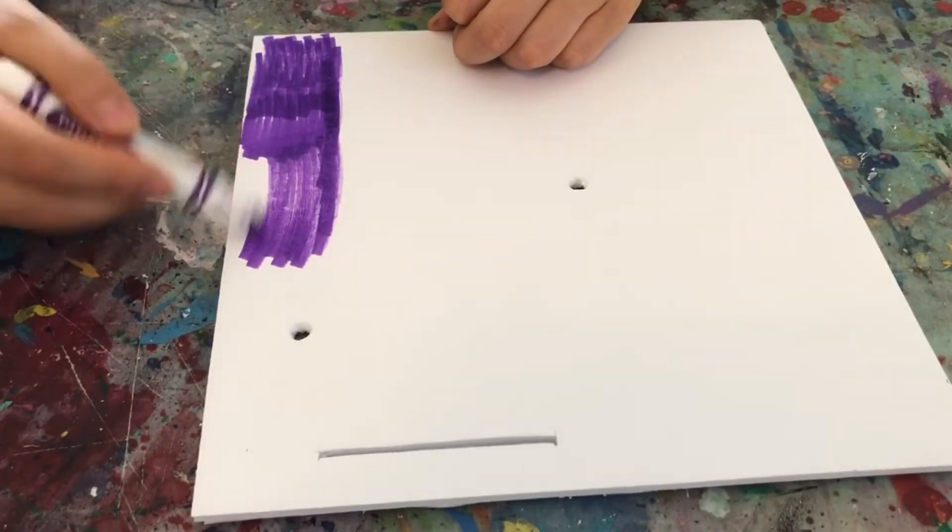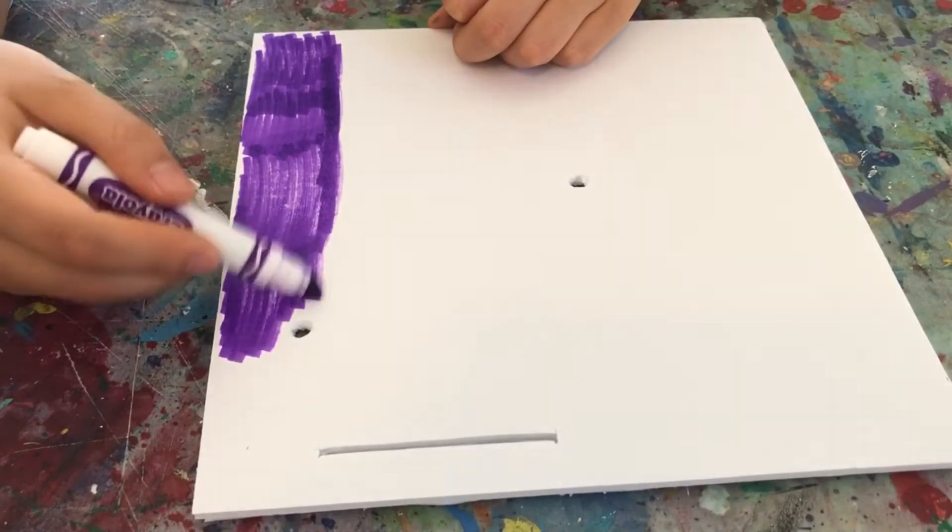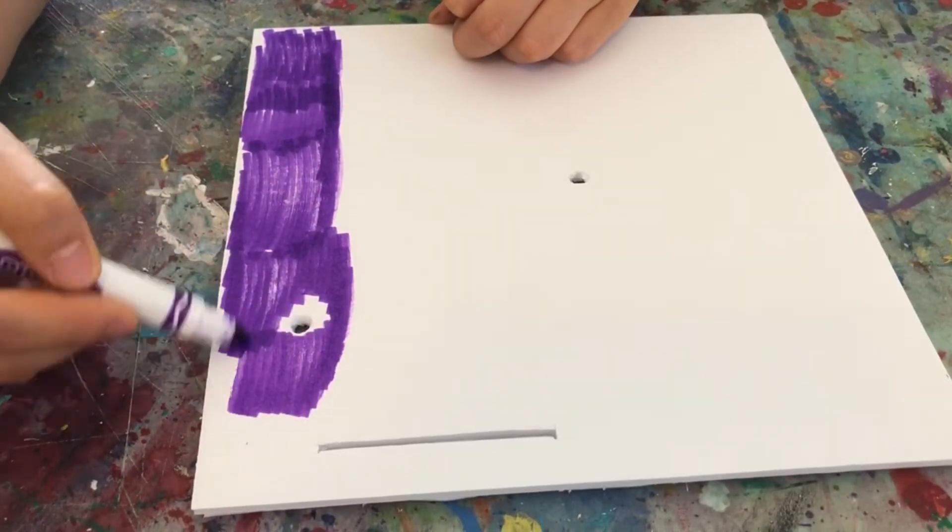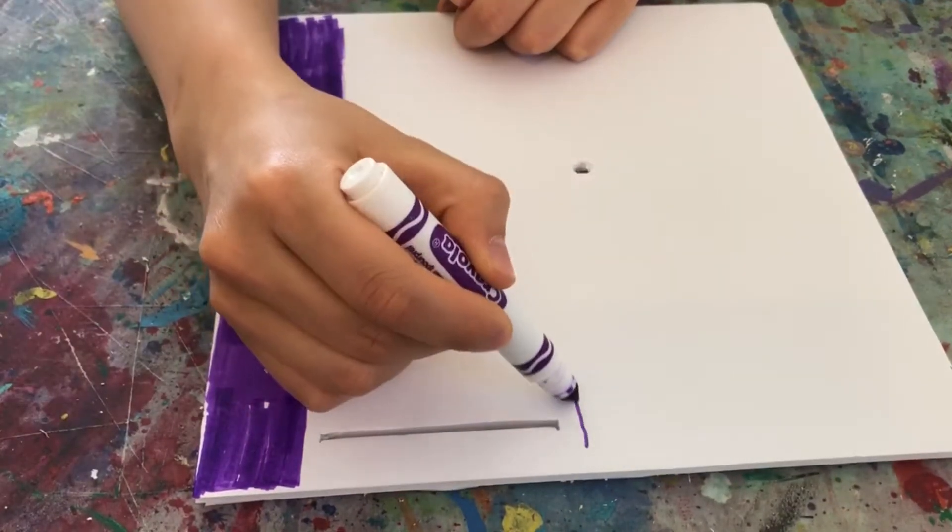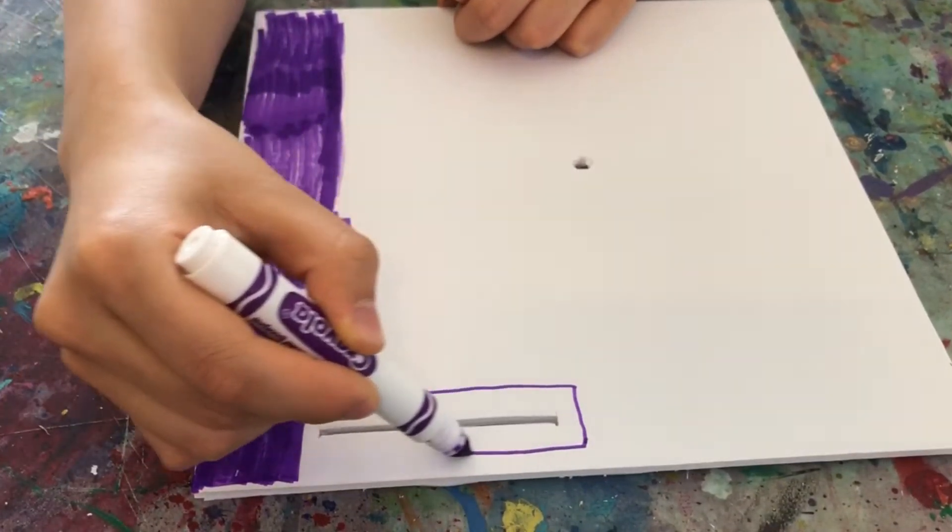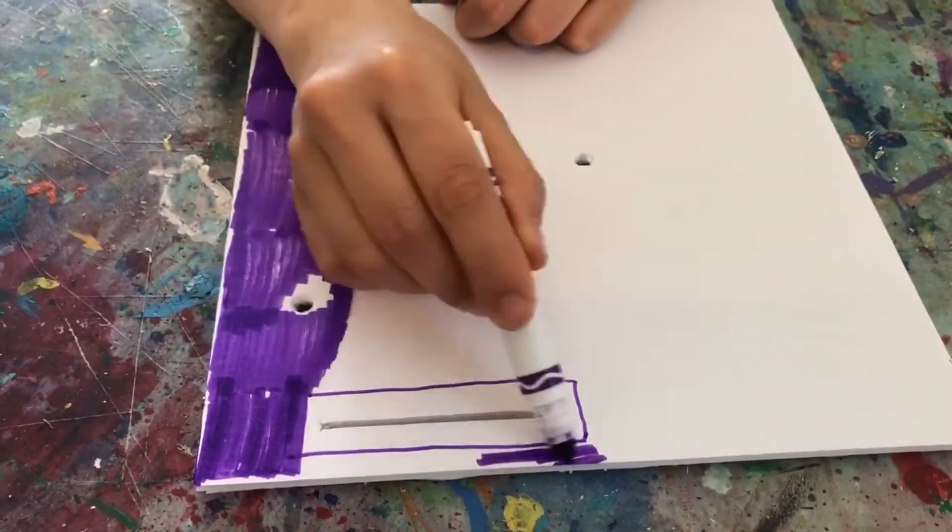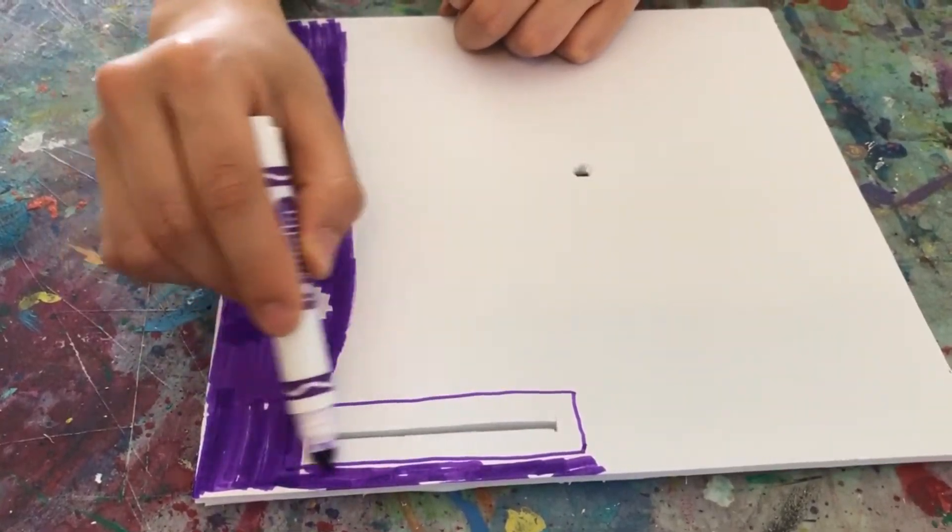Feel free to get creative and draw different designs on it. When you're coloring around the slit, that slit is actually going to be where your volume control is, so you're gonna want to leave a little bit of blank space around there so that you can draw your volume control.